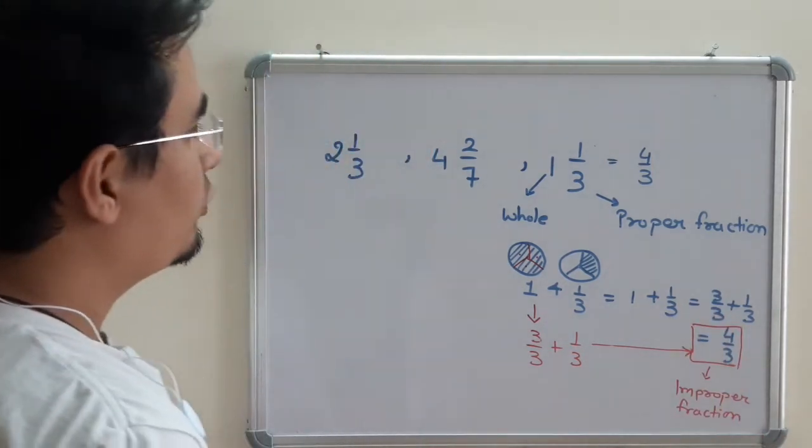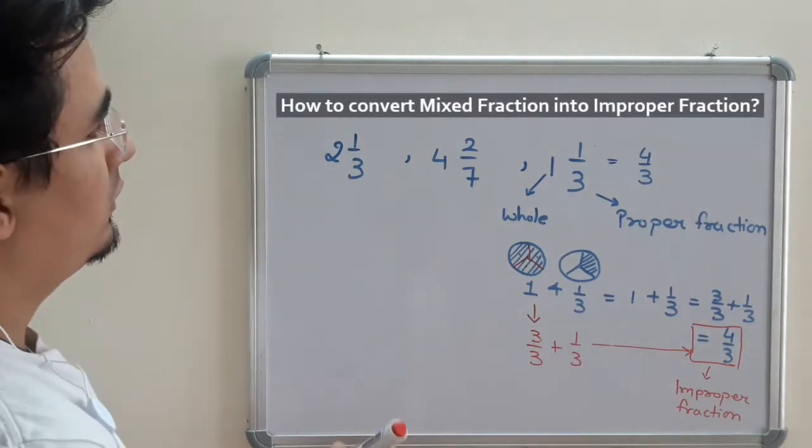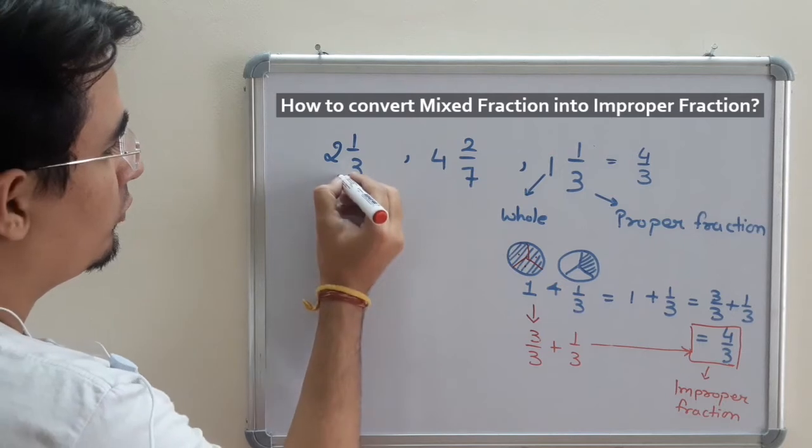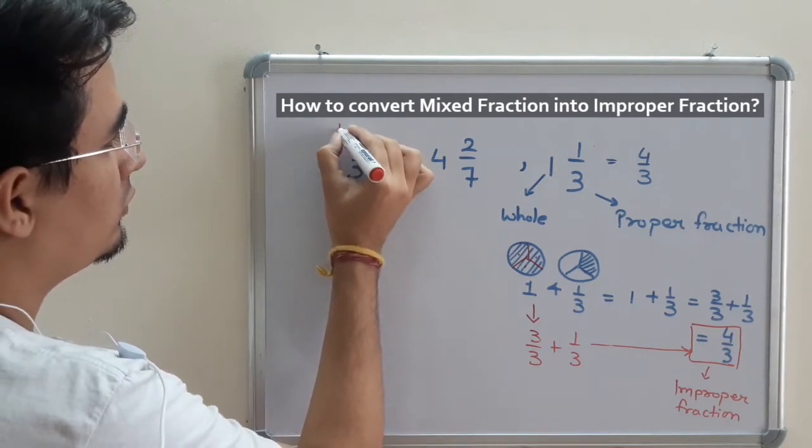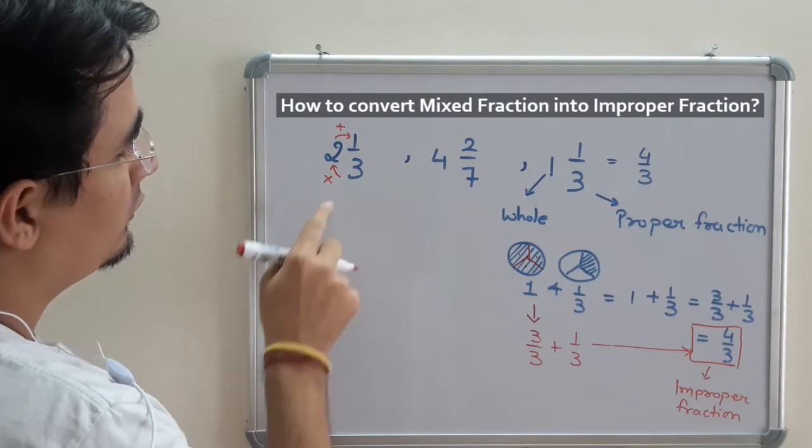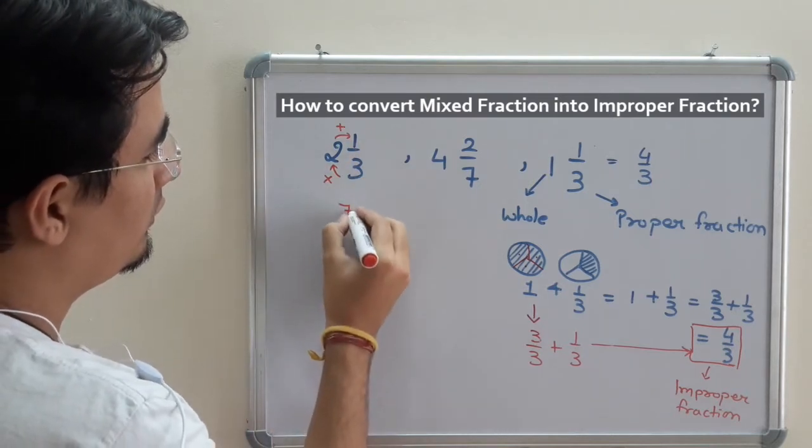Suppose you have to convert mixed fraction to improper fraction. What I have to do is multiply these two numbers and add the result to the top. So 3 times 2, 6 plus 1 is 7 upon 3.